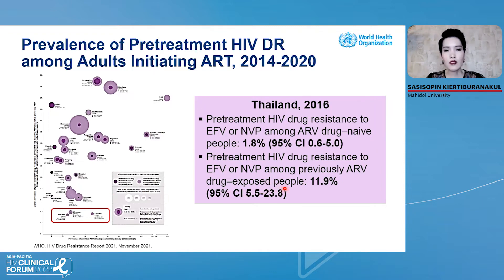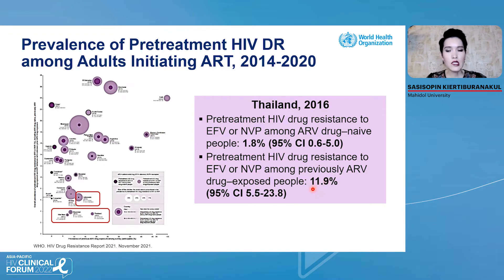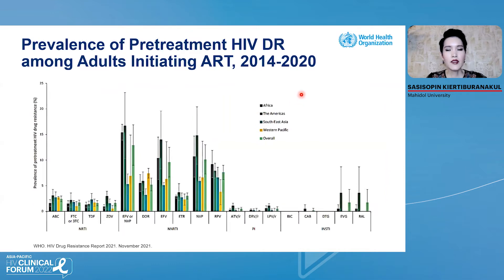In Thailand, pre-treatment HIV drug resistance to NNRTIs in naive people is around 2%, and among ARV-exposed people around 12%. After 2020, in Asia — in Myanmar, pre-treatment HIV drug resistance to NNRTIs among exposed people is almost 20%, and Indonesia has pre-treatment HIV drug resistance to NNRTIs among exposed people of almost 30%, which is very high. This figure reported by the WHO in 2021 shows prevalence of pre-treatment HIV drug resistance among adults initiating NNRTI-based ART by region. Asian countries show less than 10%, compared to Africa and America which have more than 15%.